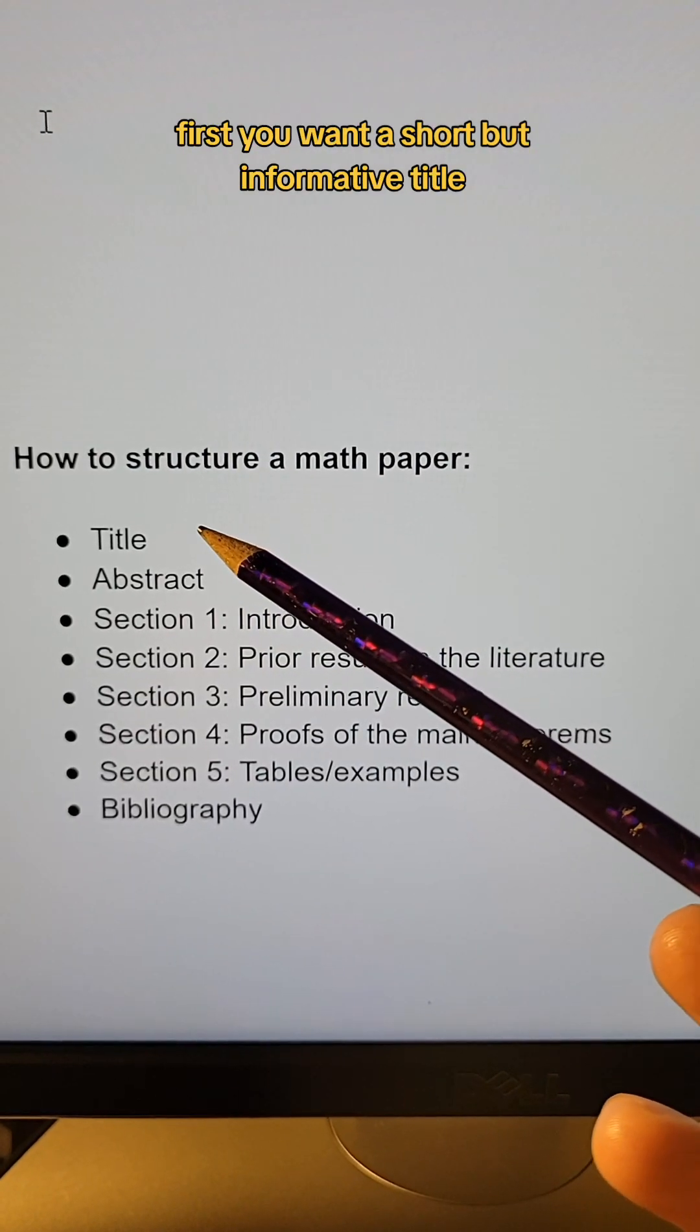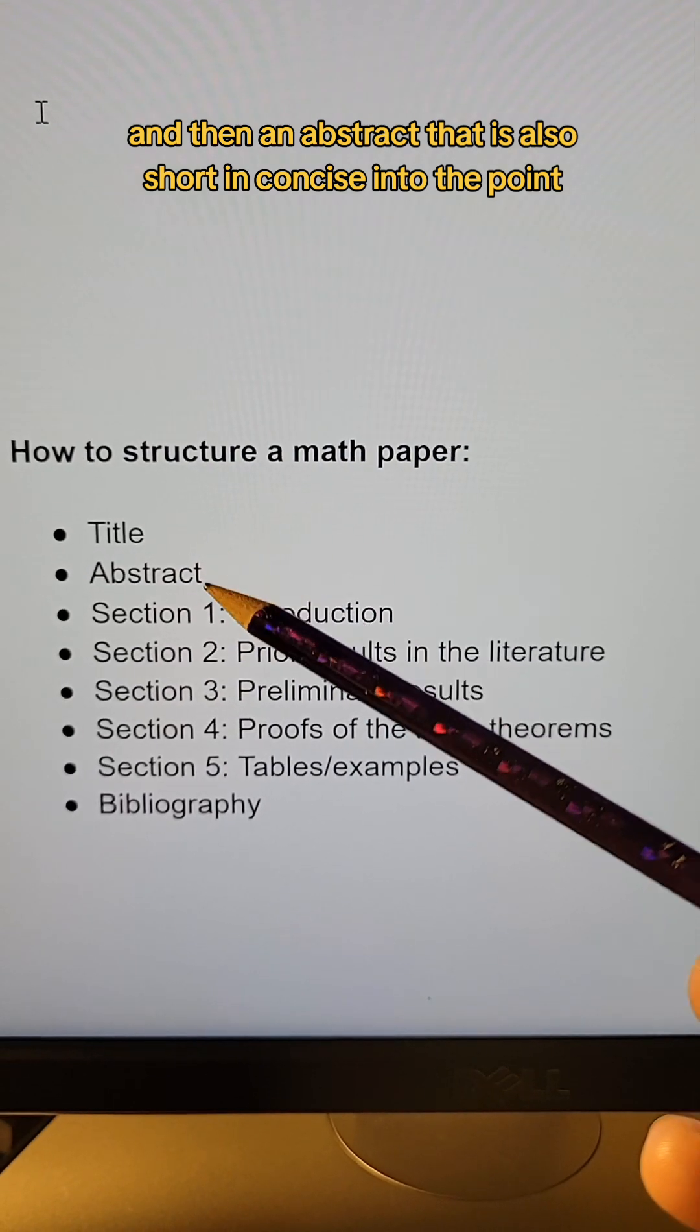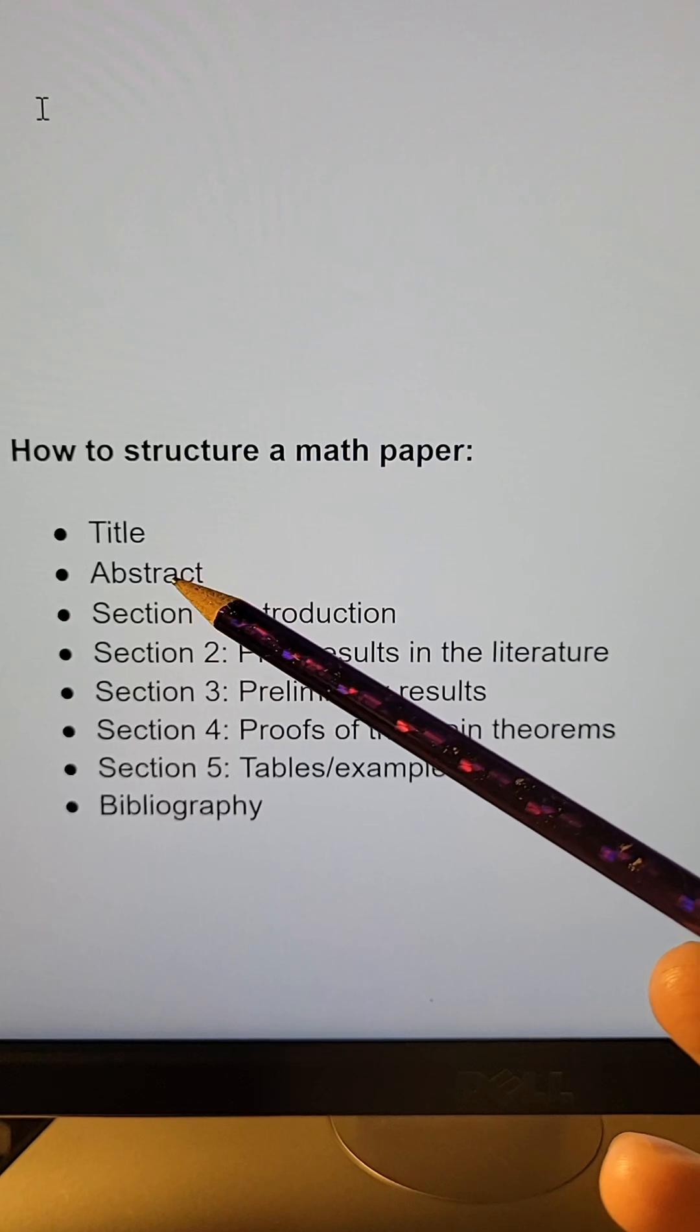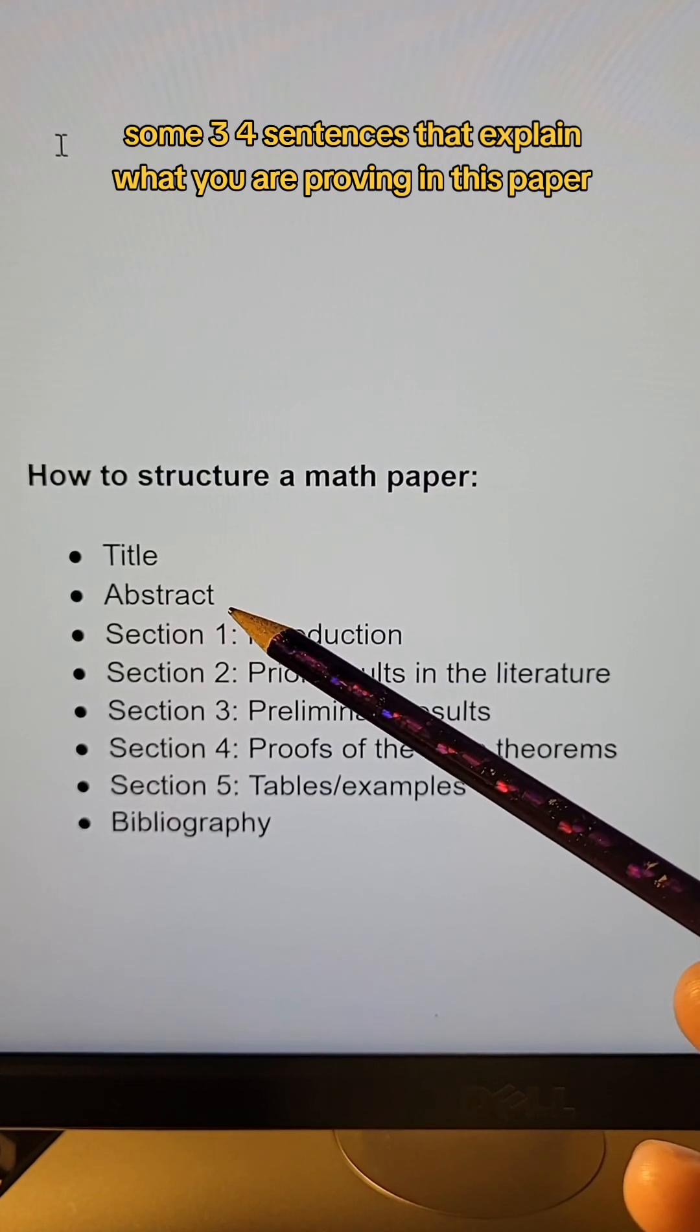First, you want a short but informative title, and then an abstract that is also short and concise and to the point—some three, four sentences that explain what you are proving in this paper.